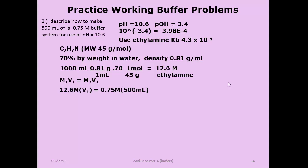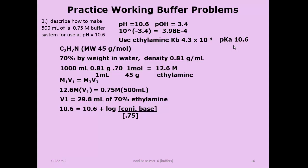Using the dilution equation with the 12.6 molar ethylamine solution, solve for the volume needed: 29.8 mils of the 70% by weight ethylamine, then dilute to a half liter volume. Next, determine how much conjugate acid to add by working through the Henderson-Hasselbalch equation, which requires the pKa. Converting from Kb to Ka using Kw, then to pKa, gives pKa = 10.6—which is exactly the target pH.